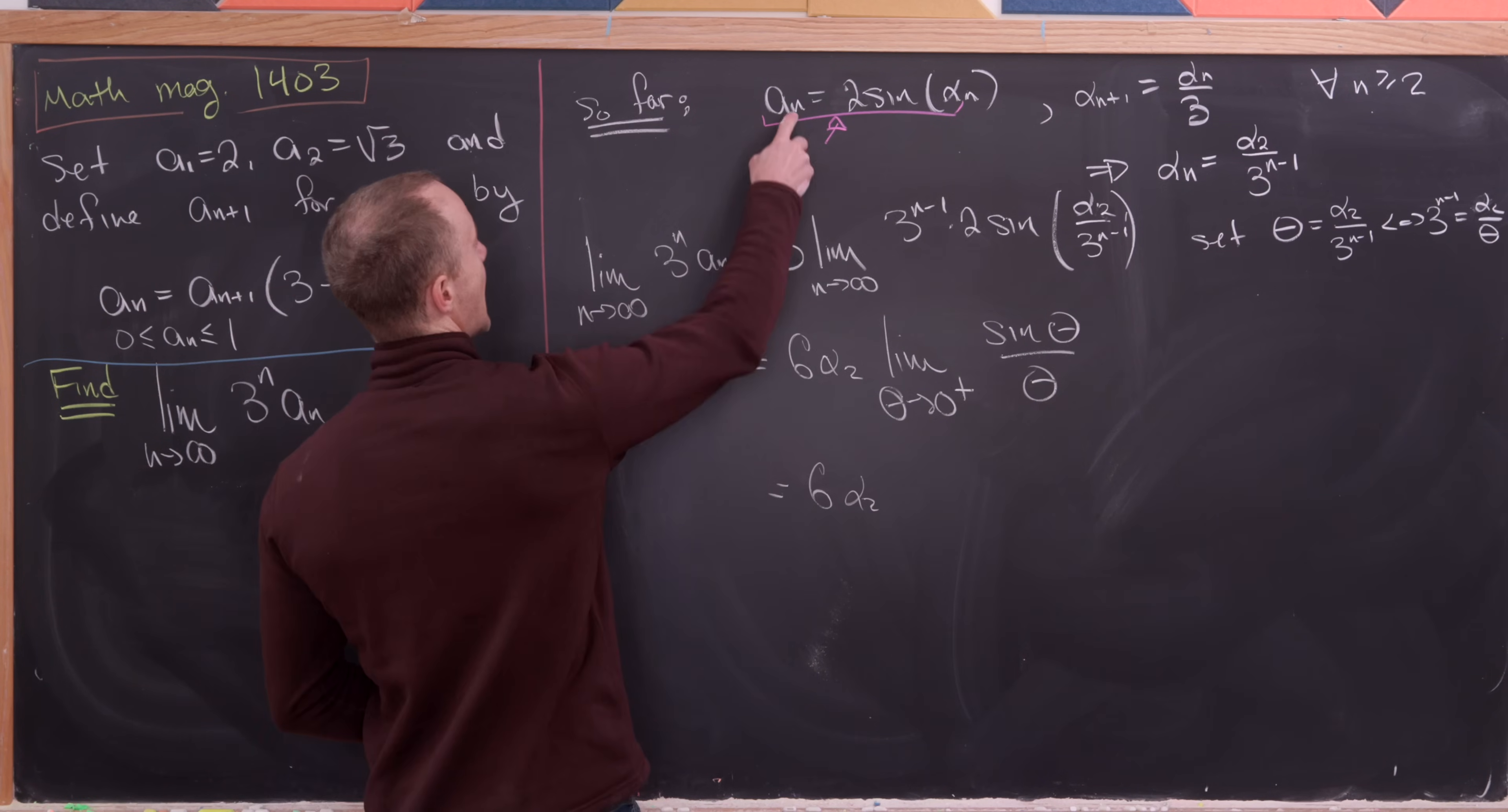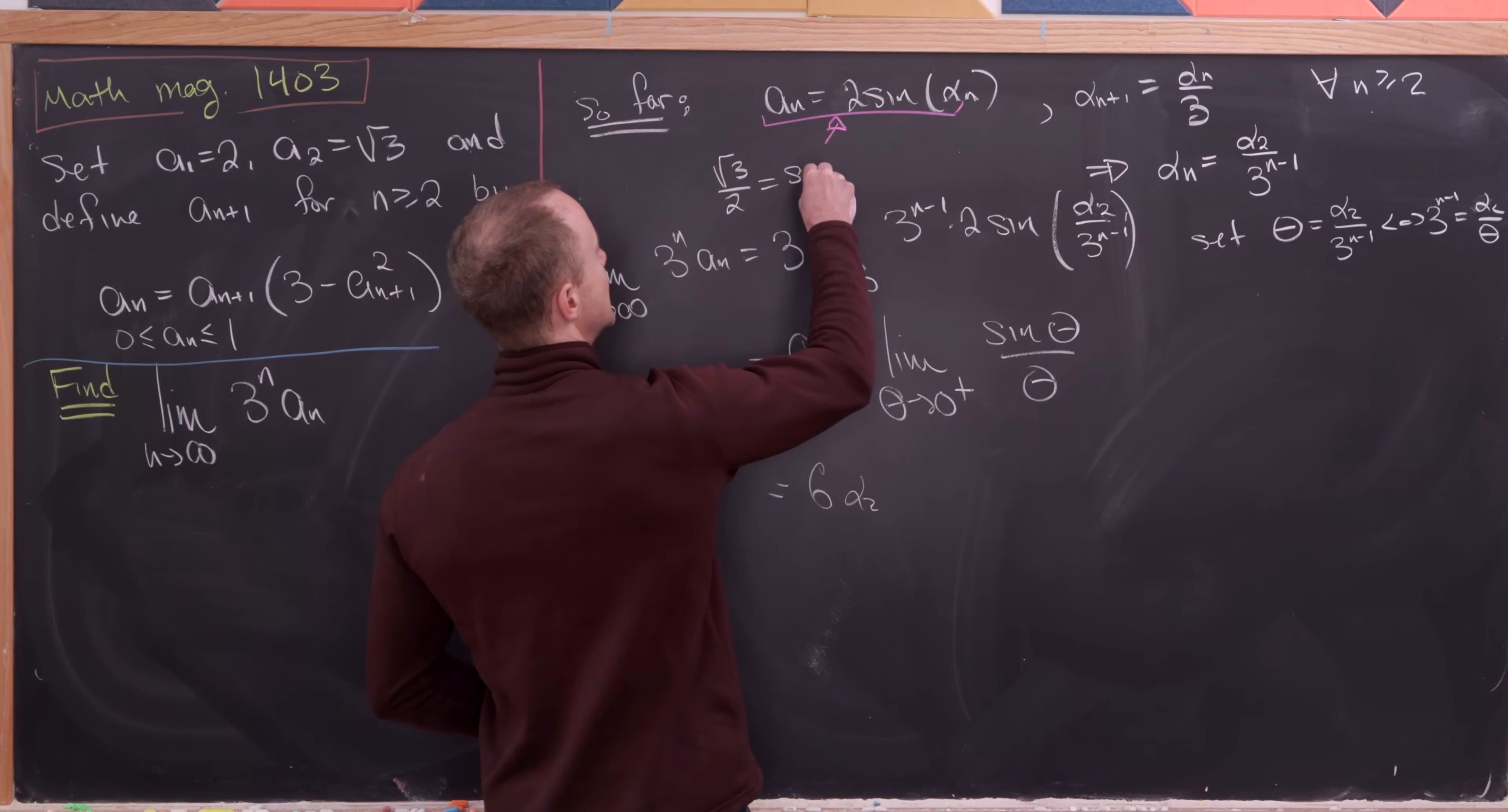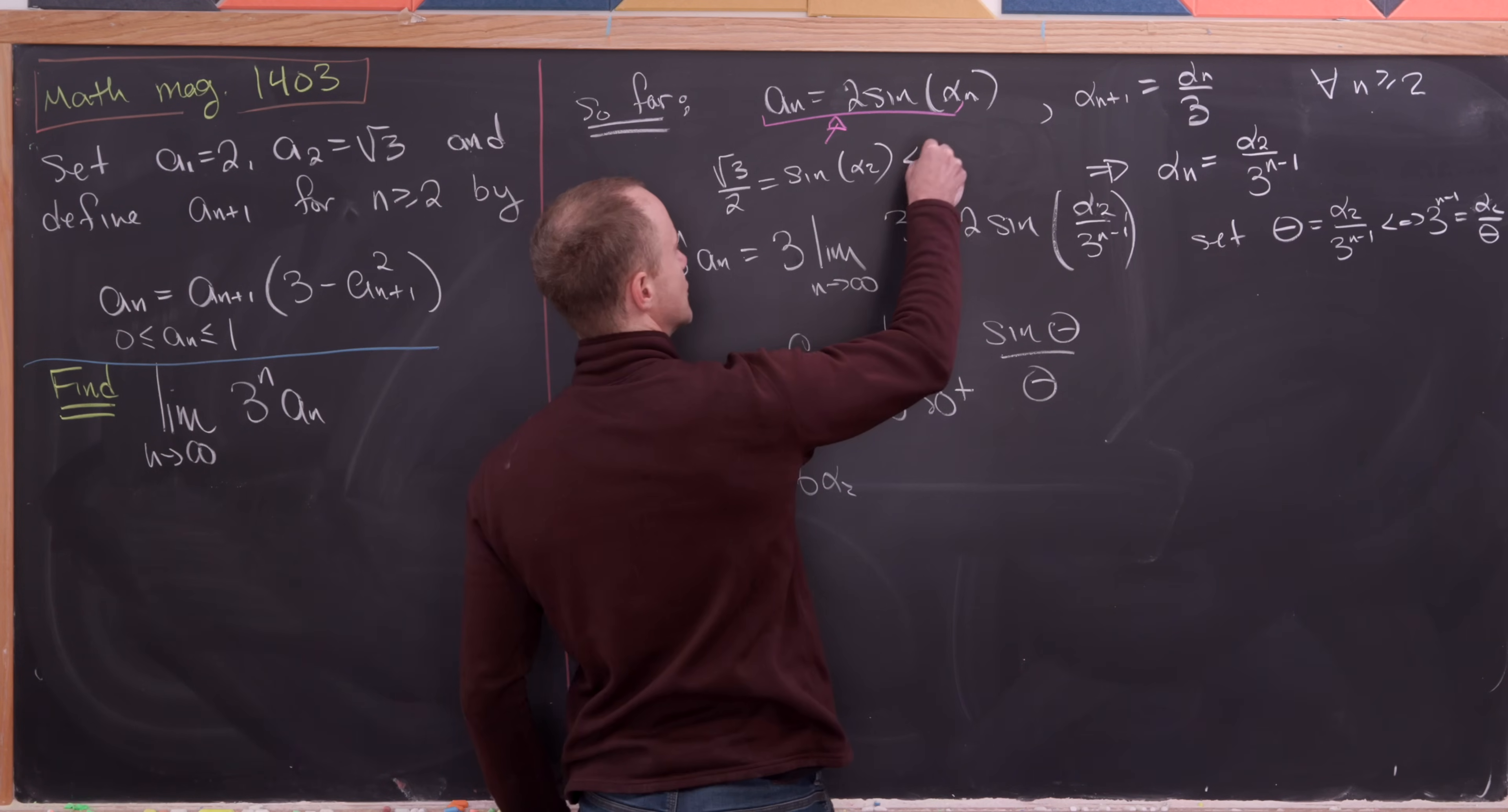But let's calculate alpha 2 using this rule right here. So what do we have? We have a sub 2, which is the square root of 3 over 2, dividing this 2 over, is the sine of alpha 2.